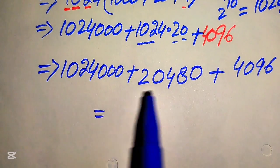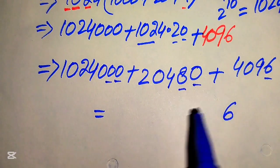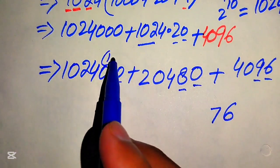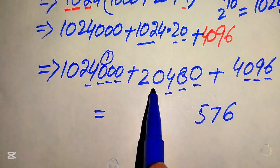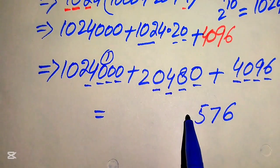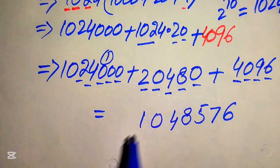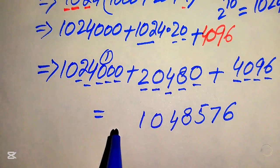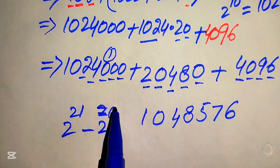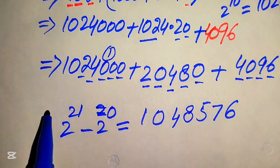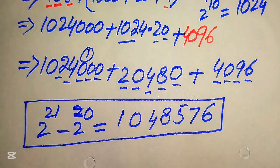In the final step, we sum up all three numbers: 1,024,000 plus 20,480 plus 4,096. Adding column by column: 0+0+6=6; 0+8+9=17 write 7 carry 1; 0+4+0+1=5; and so on, giving us 1,048,576. So finally, 2 to the power of 21 minus 2 to the power of 20 equals 1,048,576. This is our final answer. Thank you so much for watching — please subscribe to my channel for more exciting videos.